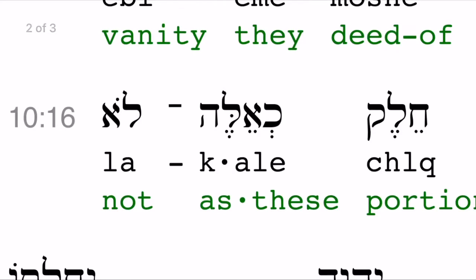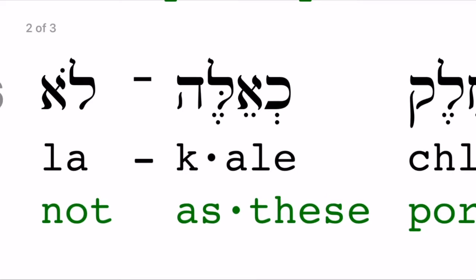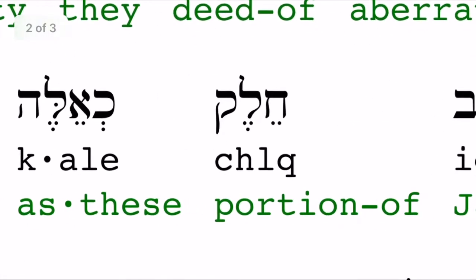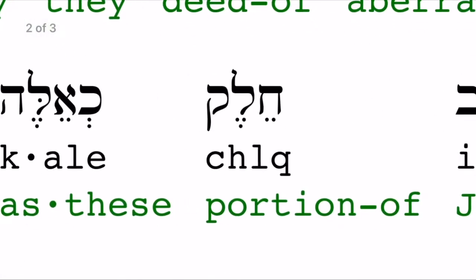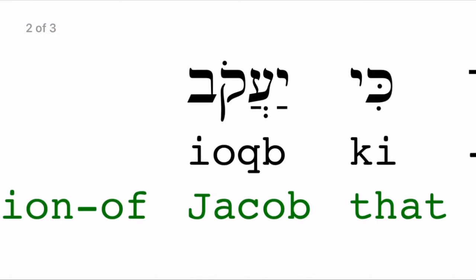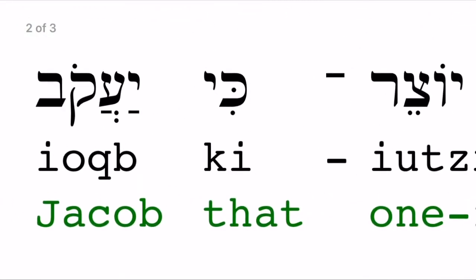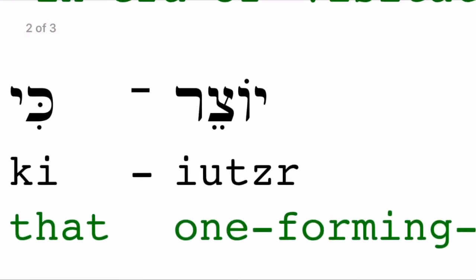The first word we have here is 'la,' which means 'no' or 'not.' Next is 'ka-ala' — 'ka' at the beginning of the word means 'as,' and 'ala' is the root word which means 'these,' so in this case it would mean 'such,' so 'no such' or 'not such.' Then we have 'halak,' which means 'portion,' 'share,' or 'part.' Next we have 'yaikwab,' which means Jacob.